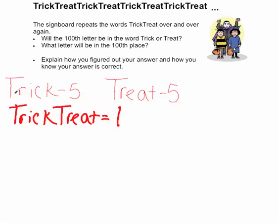Trick-treat has ten letters. Now I know that ten groups of ten can fit into a hundred. So I'm going to multiply ten times ten equals one hundred.